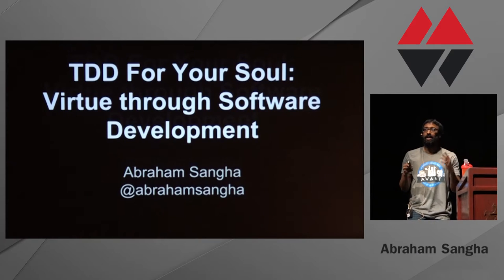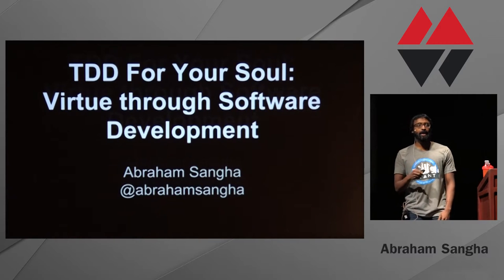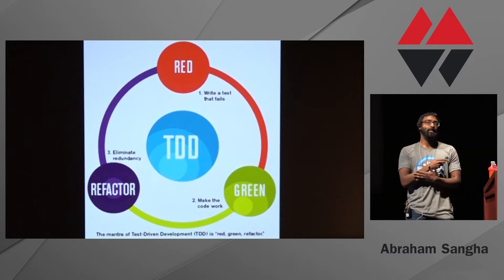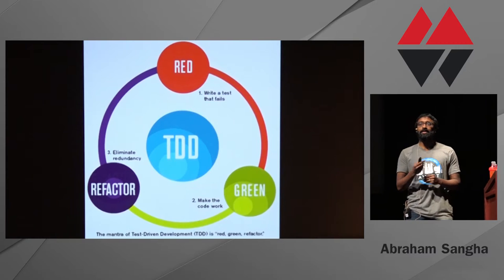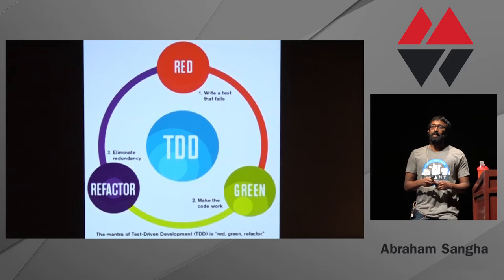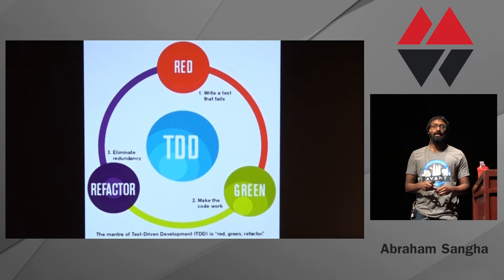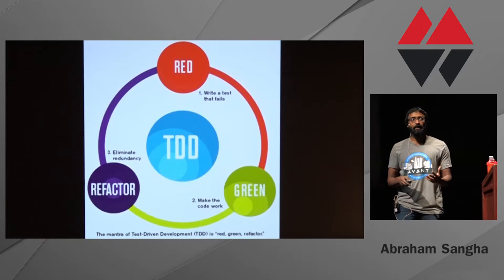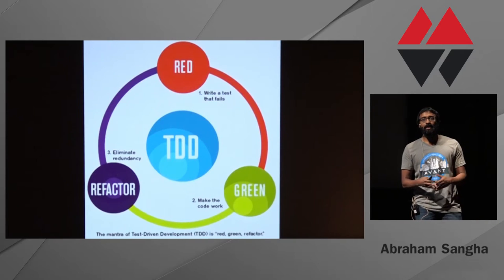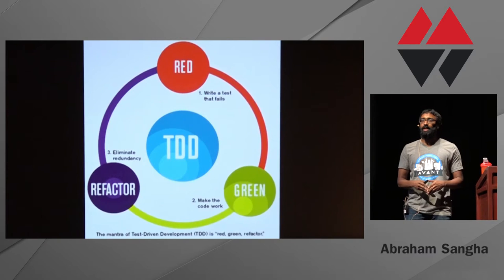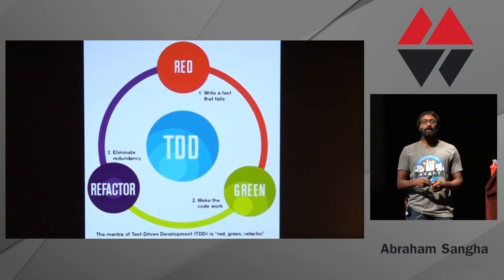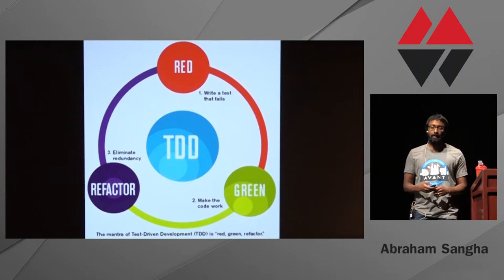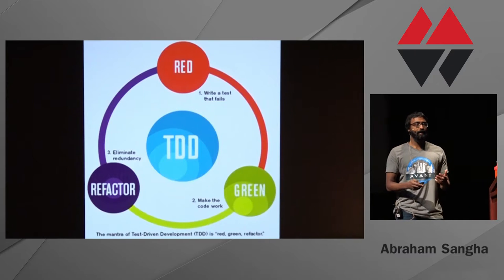TDD — I'm assuming everyone here knows what that means, but just in case, let's quickly review. We can summarize it with three steps: red, green, and refactor. Red is writing a test or spec that fails. Green is writing the code to make that test or spec pass. And the third step is refactor — changing the code, improving it for readability and elegance while maintaining the behavior. Then you start over again. That's test-driven development.